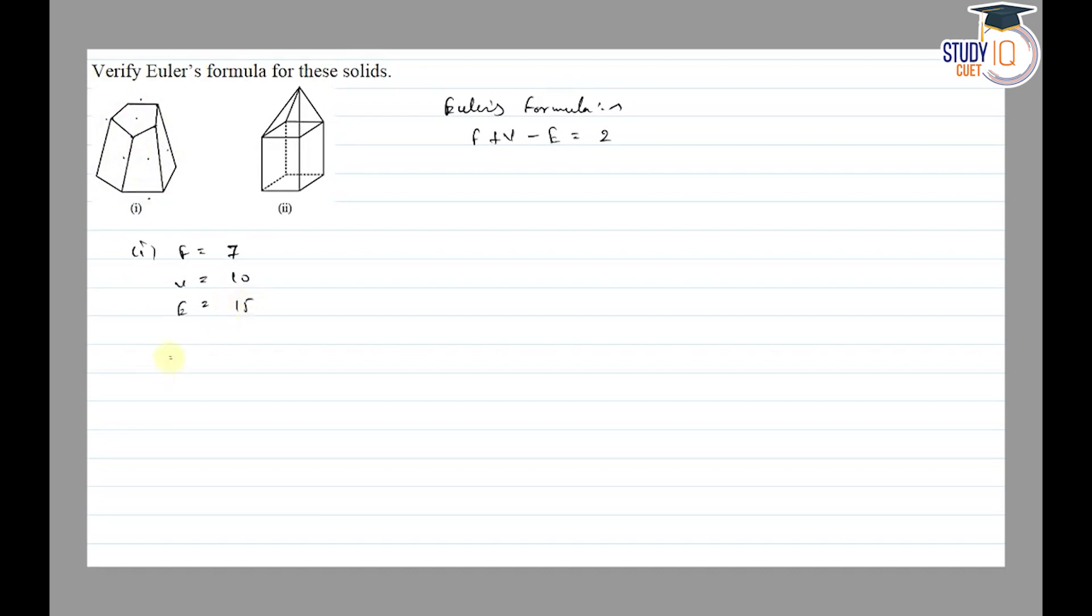Then we apply F plus V minus E is equal to 2. So 7 plus 10 minus 15 is equal to 17 minus 15 is equal to 2. So it's verified.